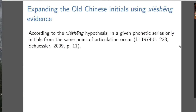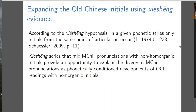That tendency has been paraphrased as a methodological principle: a Xie Xiong series should have initials only from the same point of articulation. Xie Xiong series that mix Middle Chinese pronunciations with non-homoorganic initials provide an opportunity to explain the divergent Middle Chinese pronunciations as phonetically conditioned developments of Old Chinese readings with homoorganic initials. It's a kind of internal reconstruction, but now we're working from trying to fix those places where our work so far does not yet bring the initials into conformity.